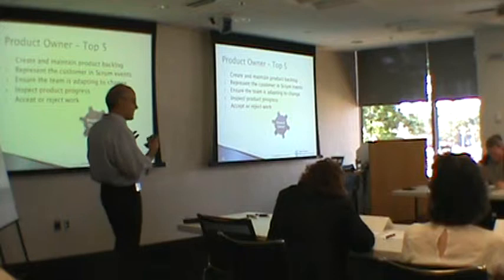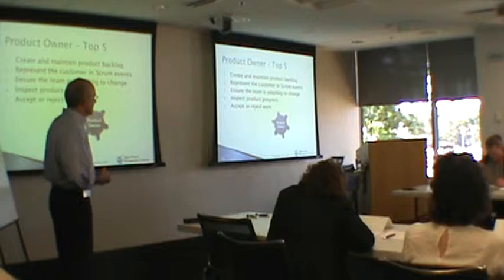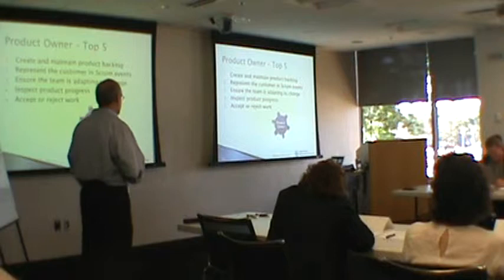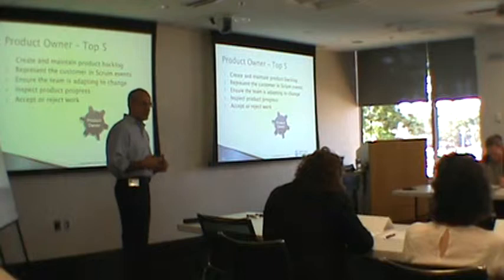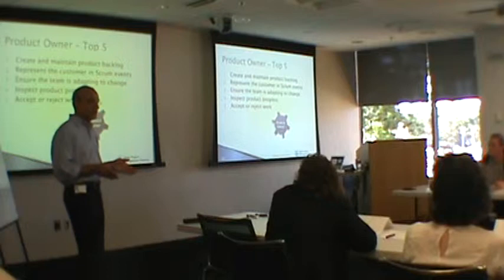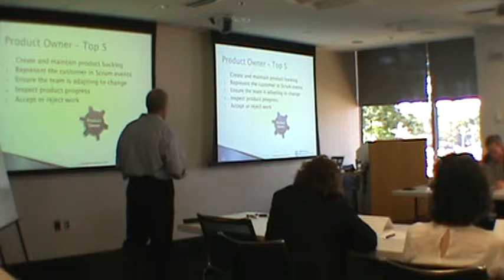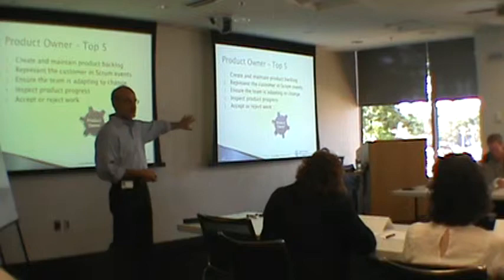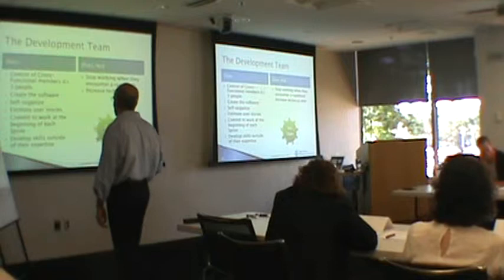The Product Owner's top five things: you need to create and maintain the product backlog; represent the customer in scrum events — all those sprint or iteration meetings; show the teams how to adapt to change, because you're responsible for introducing change and you need them to understand you could change direction completely each iteration; inspect product progress; and ultimately accept or reject work. Any problems with these core five? This is the meat of it.